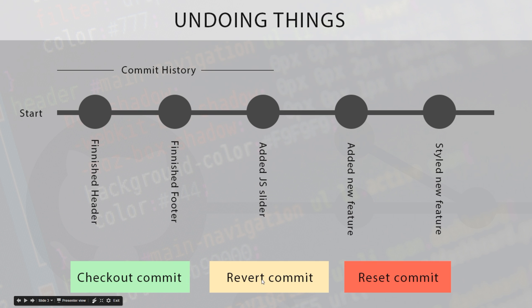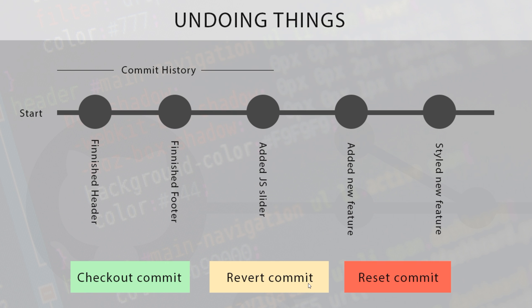The reason they're colored differently is because they're in order of danger. Checkout is green because it's completely safe — it's not going to let you edit anything or ruin your commit history. Revert commit is still very safe, but potentially not quite as safe. Reset is basically unsafe, and you want to be sure you need to use it before you do, because it could potentially ruin your repository.